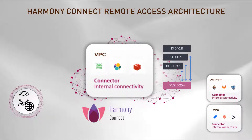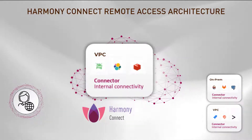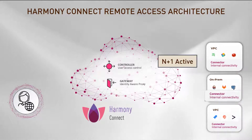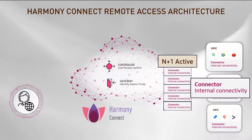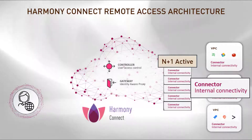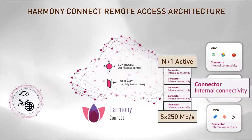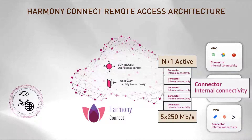High availability may be set using N+1 active-active per site, distributing the load between connectors by consistent hashing. This means you can scale up and down the number of connectors and the traffic will distribute equally between them while still maintaining connection stickiness.